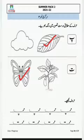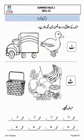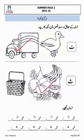اب 'حرف کے مطابق درست تصویر میں رنگ بھریں۔' ٹے — ٹرک میں رنگ بھرنا ہے۔ سے — سمر میں رنگ بھرنا ہے۔ نیچے 'حروف لکھئے' — آپ نے ٹے اور سے کے نکات کو ملانا ہے۔